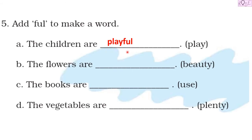Next is 'The flowers are...' and we have 'beauty'. When we add 'ful' it will become beautiful. Beautiful is also an adjective, and in this sentence it is being used to describe the flowers.